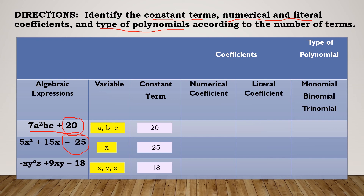For the numerical coefficients — the constants written before the variables — the first example has 7. The second example has 5 and 15. The third has -1 and 9. Note: when a variable has no written numerical coefficient, it is understood to be 1 (positive or negative depending on the sign). For example, variable a has coefficient +1 and -a has coefficient -1.